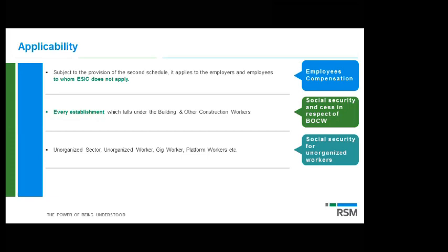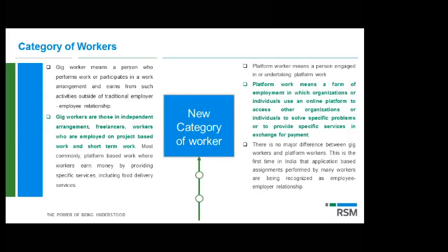Social security for unorganized workers — for the first time a formal framework is being introduced. Platform workers and gig workers are now covered under social security provisions. Gig workers — freelancers, people working from home, platform workers such as Uber or Ola drivers or food delivery personnel for Zomato and Swiggy — are not formally employees of those companies as they are technology aggregator platforms without an employer-employee relationship. Now they are also brought under this framework.